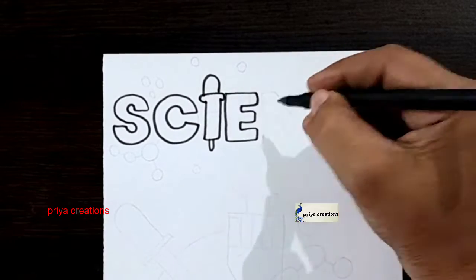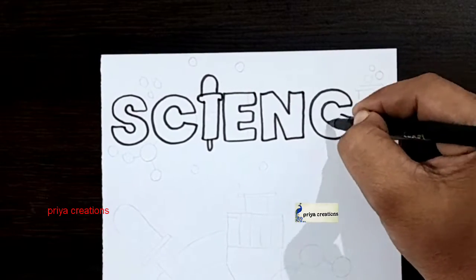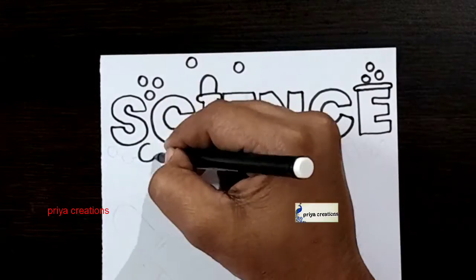Here I am using black color sketch pen to draw this design. This is a science cover page design. Draw the outline like this.